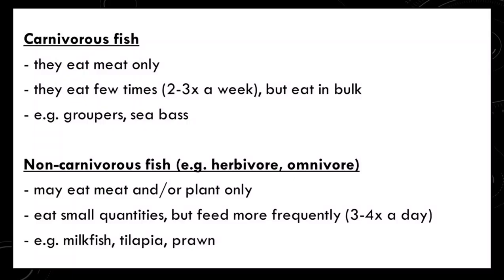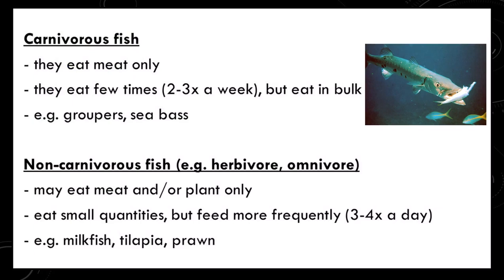Carnivorous fish eat meat only. They eat few times, about 2-3 times a week, but eat in bulk. Examples are the groupers, sea bass, and tuna. On the other hand, non-carnivorous fish such as herbivores and omnivores may eat plants only. They usually eat in small quantities but feed more frequently, about 3-4 times a day. These include milkfish, tilapia, prawn, and other species.